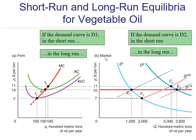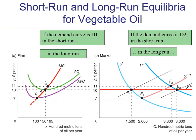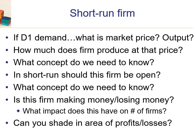Let's go through step by step the transition from short-run equilibrium to long-run equilibrium. We have demand D1 and a short-run supply curve. I have a series of questions here — maybe pause the video and see if you can answer them. I expect students to be able to determine the market price, market output, and firm output when demand is D1.